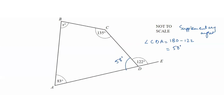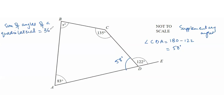Since this is a quadrilateral, the sum of angles of a quadrilateral equals 360. So x equals 360 minus 135 minus 83 minus 58. We subtract all the given angles from 360 to find the unknown angle. That gives us 84 degrees.